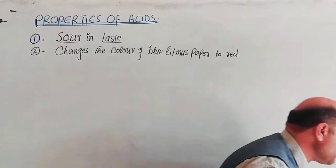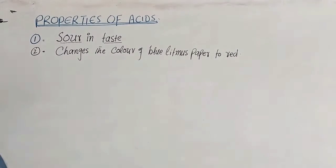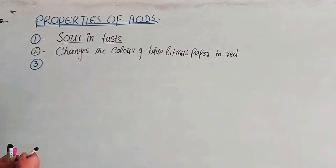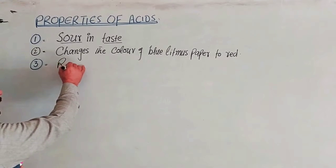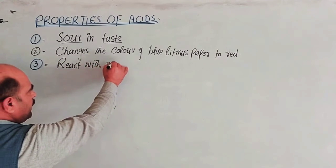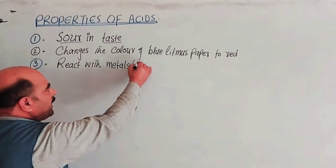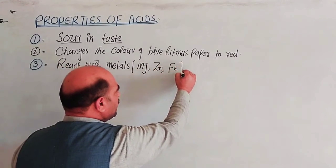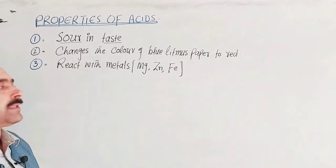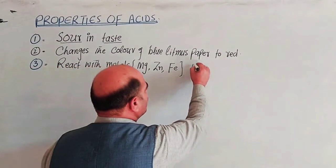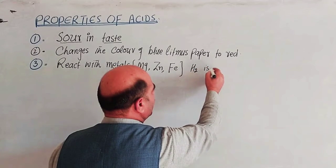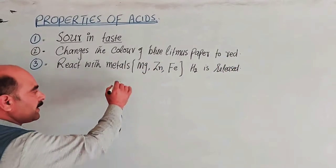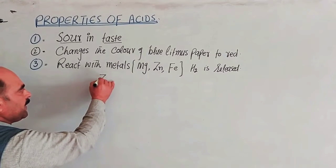Another main property of acids is that they react with metals and release hydrogen gas. Examples of such metals include magnesium, zinc, and iron. When these metals react with an acid, hydrogen gas is released. This is another main property of acids.